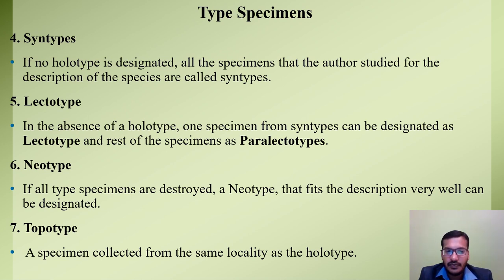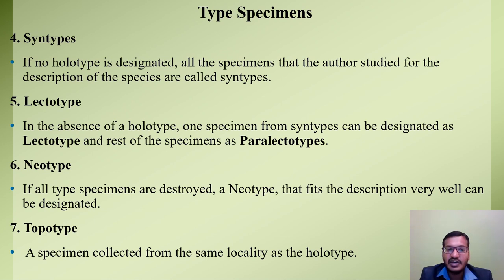The next type is neotype: if all type specimens are destroyed, a neotype that fits the description very well can be designated. For example, if holotype, allotype, paratype, syntype, lectotype, and paralectotypes are all destroyed, a new specimen showing maximum similarities with the original type specimens is designated as neotype. The final type is topotype: a specimen collected from the same locality as the holotype — collected from the same place where the original author collected the original type specimens.